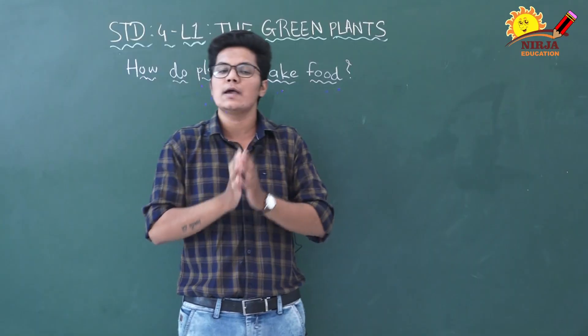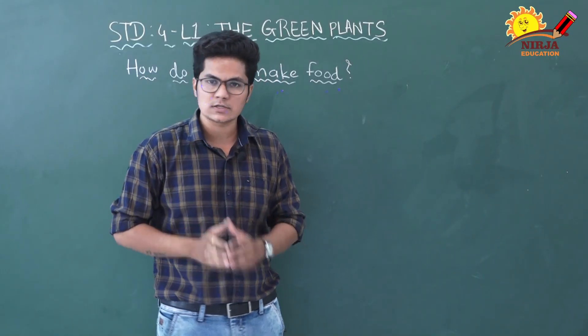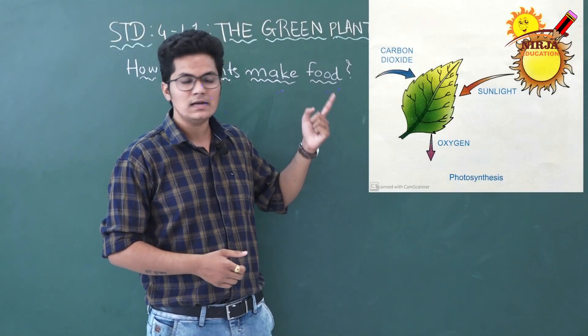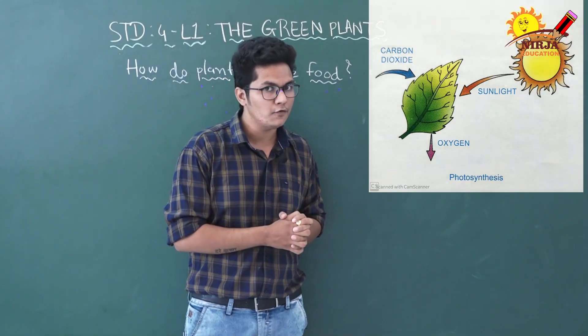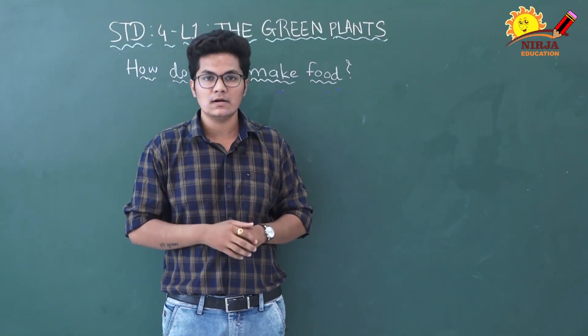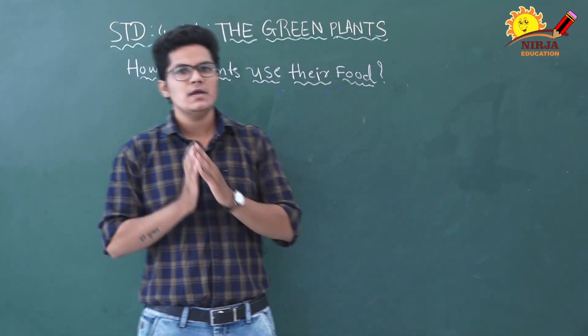You can see in the picture how plants get sunlight and using that sunlight, carbon dioxide, and water, plants make their food. This is how plants make food. Now let's learn how do they use the food.